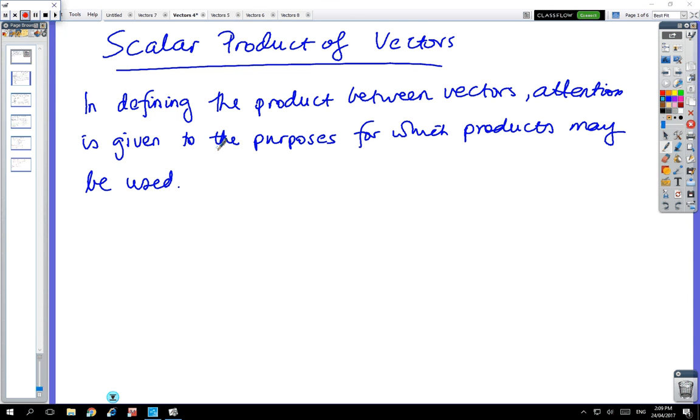We're coming up to a harder concept and you just need to persist with the explanation. At the end we come up with a nice little formula, but you have to persist with me explaining it. We're defining the scalar product of vectors. In defining the product between vectors, I need to give you a purpose for which products may be used.